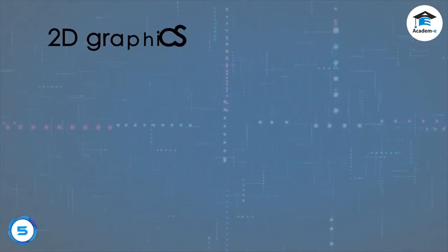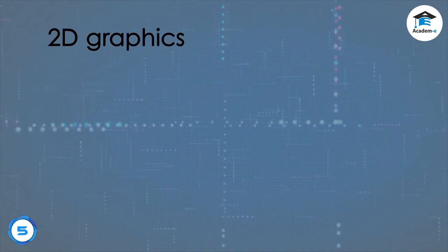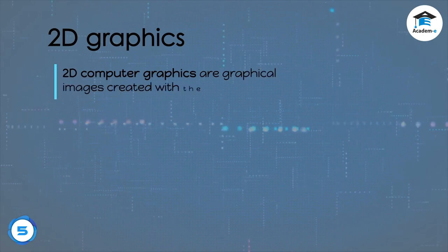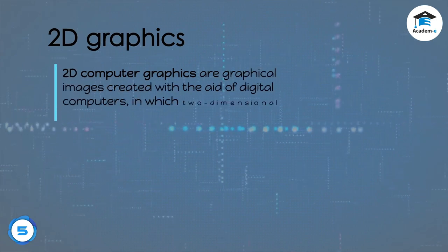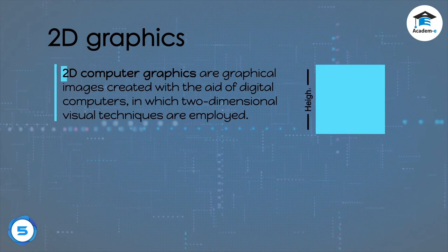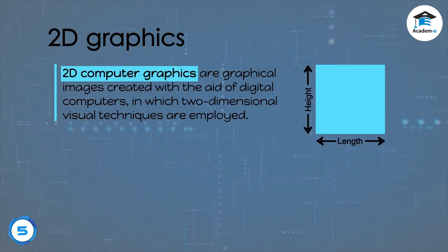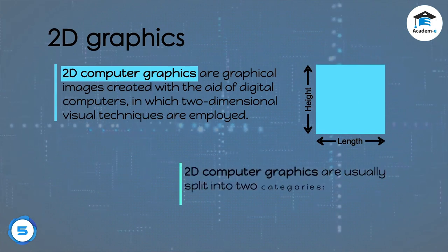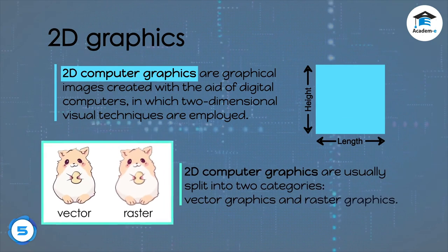2D graphics: 2D computer graphics are graphical images created with the aid of digital computers in which two-dimensional visual techniques are employed. 2D computer graphics are usually split into two categories: vector graphics and raster graphics.